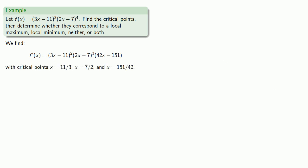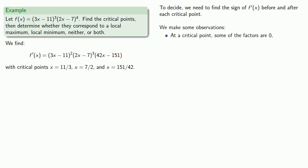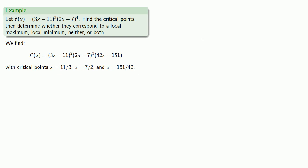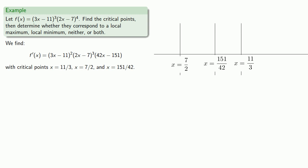To decide whether a critical point corresponds to a local maximum, local minimum, neither, or both, we need to find the sign of the derivative before and after each critical point. We note that at each critical point some of the factors are zero, and the sign of any individual factor can only change if the factor becomes zero or undefined. This means the critical points are the only places where the derivative could possibly change signs, and that depends on the sign changes of the individual factors. So let's determine the sign of each individual factor — (2x − 7)³, (42x − 151), and (3x − 11)² — around each of the critical points.